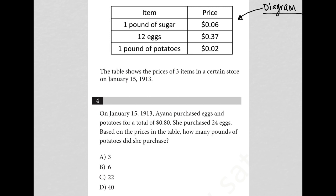Our first column here says we have a pound of sugar, 12 eggs, a pound of potatoes, and we have a price for each of those things. The table shows the prices of three items.